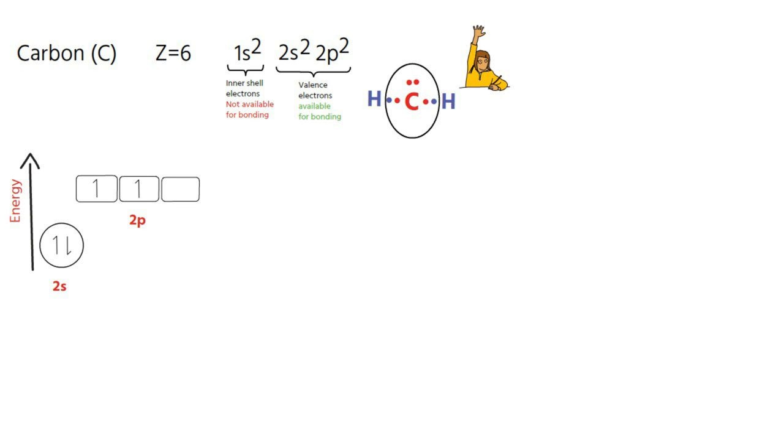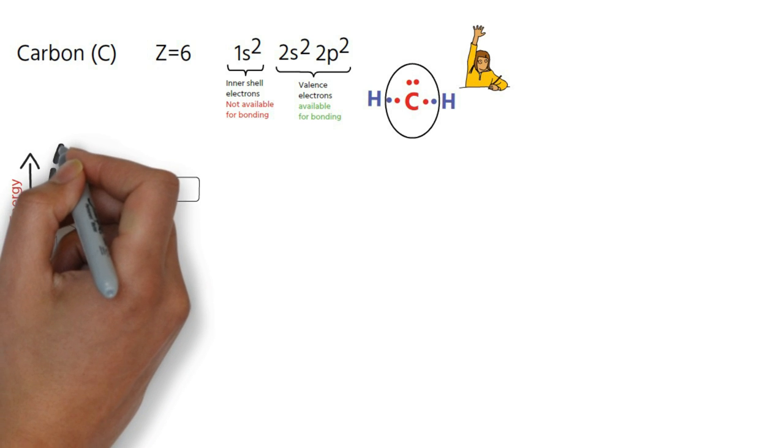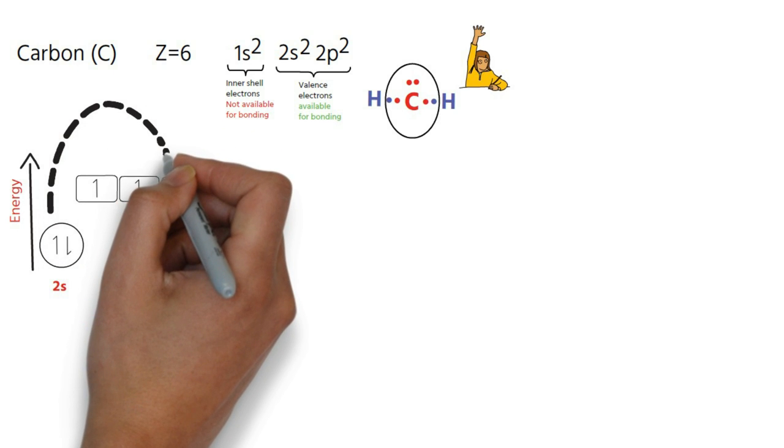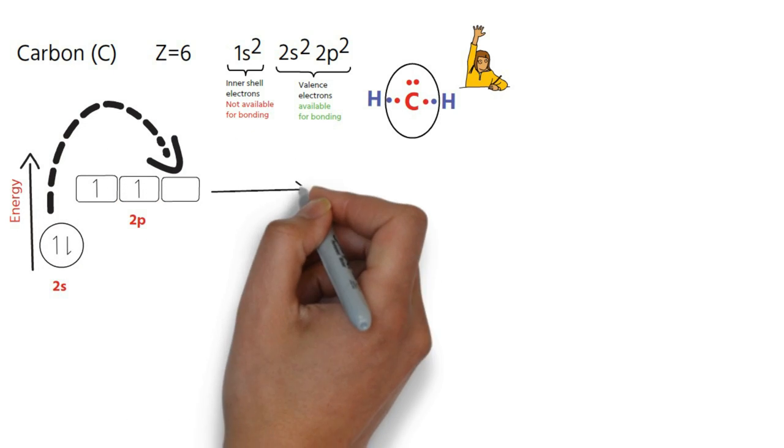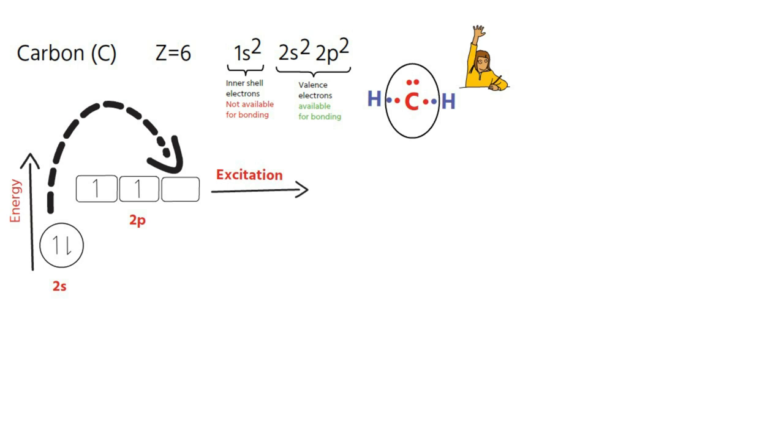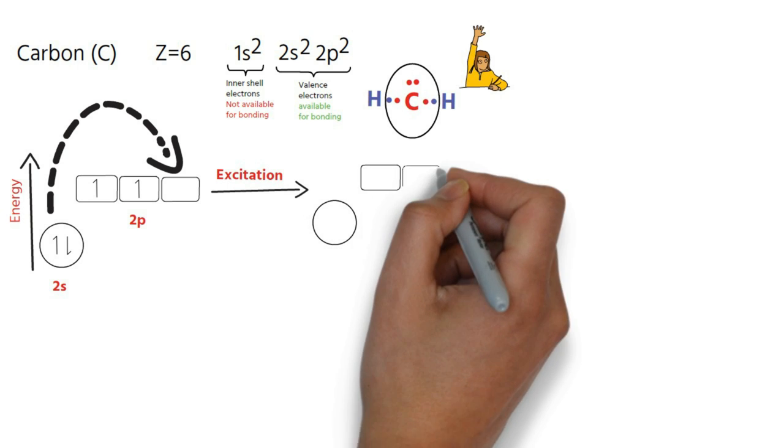But in reality, carbon shows tetravalency and form four bonds. Pauling suggested that in the process of bond formation, one of the electron from 2s orbital of carbon gets excited to empty 2p orbital. This makes four unpaired electrons available in the valence shell for bond formation.